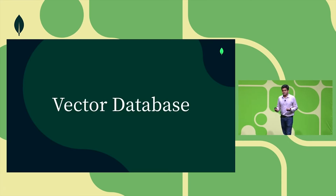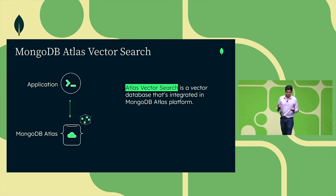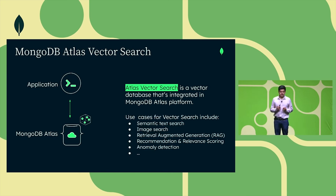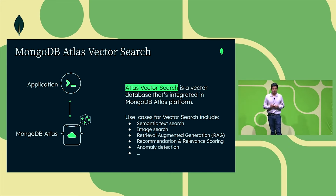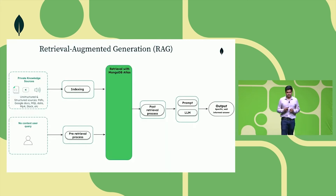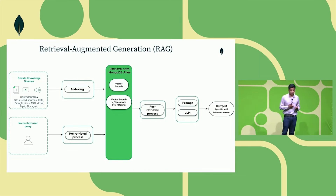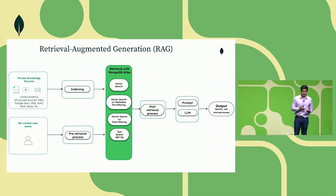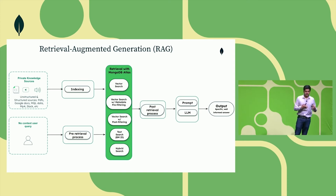That brings us to the vector database — specifically the vector search integrated into MongoDB's Atlas platform, announced at the last .local, which has seen massive growth. With the retrieval system in your RAG pipeline, it's an iterative process: start with vector search, move to vector search with metadata filtering, then post-filtering, then combine that with text search — traditional keyword-based search like BM25 — and ultimately combine vector search and text search into hybrid search.